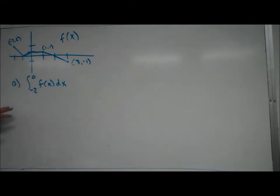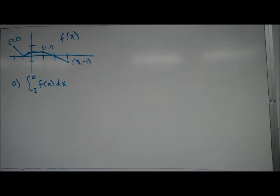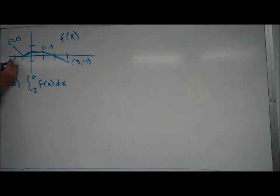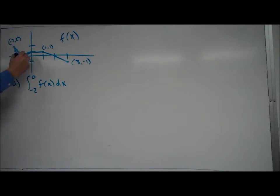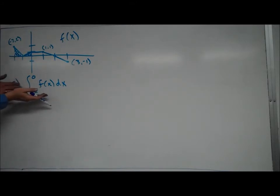The integral from negative 2 to 0 of f of x is going to be representative of the area under the graph of f of x from negative 2 to 0. So let's go ahead and take a look here. From negative 2 to 0, I have this area that looks like this right here, as well as this area right here. So essentially, all I need to do is figure out what this integral is.